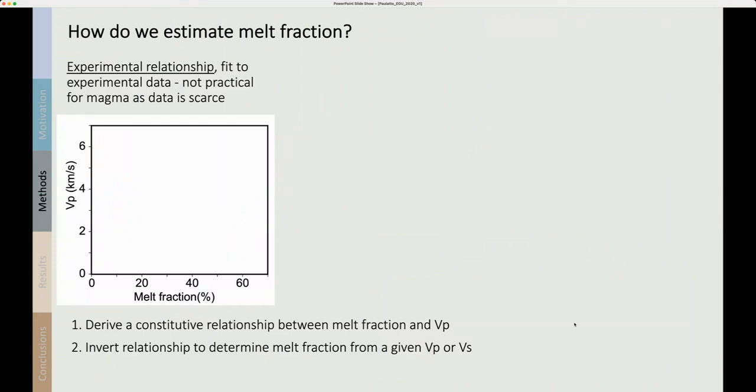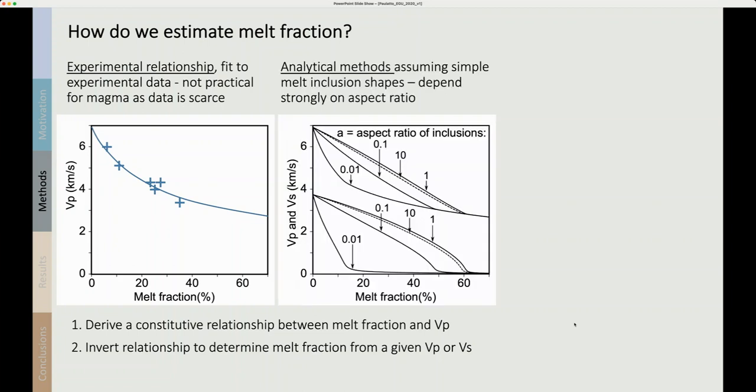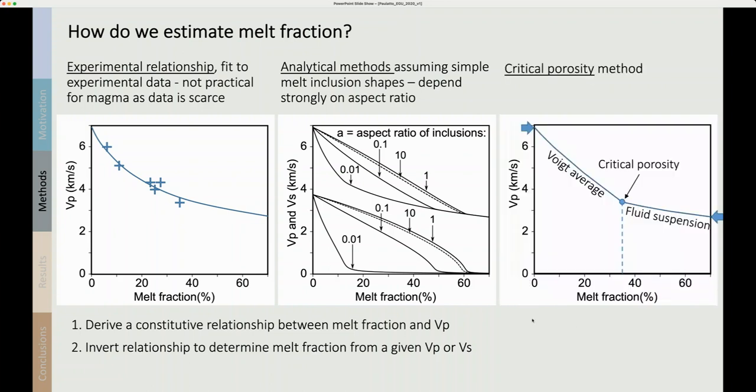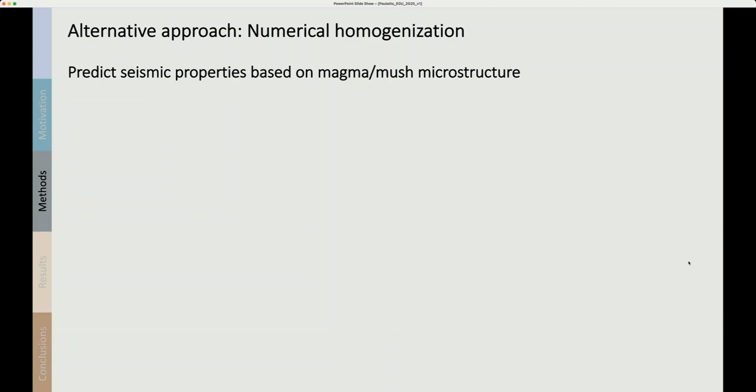So how do we estimate melt fraction? Well one option is to use experimental relationships, so if we were able to measure Vp of partially molten rocks in the lab we could then fit the experimental data to derive a curve that we can invert to determine melt fraction from Vp or Vs. There are also analytical methods that assume simple melt inclusion shapes, but this depends strongly on aspect ratio. An alternative approach uses the critical porosity concepts but it also depends on some poorly constrained parameters like the critical porosity and the properties of the background matrix and the melt.